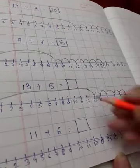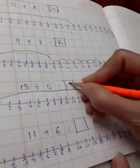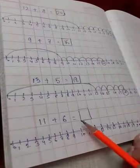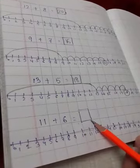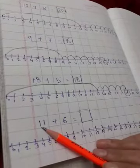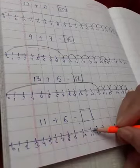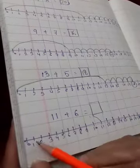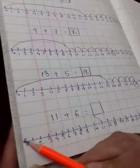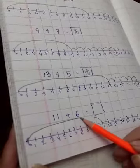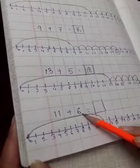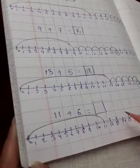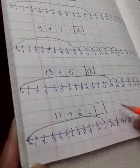Circle it and write it in the box. Next is 11 plus 6 equal to box. So we will go to number 11, this is number 11. Then we will do the long jump from 0 till 11. And then which number is this? This is number 6, so then we will do small jumps up till 6.